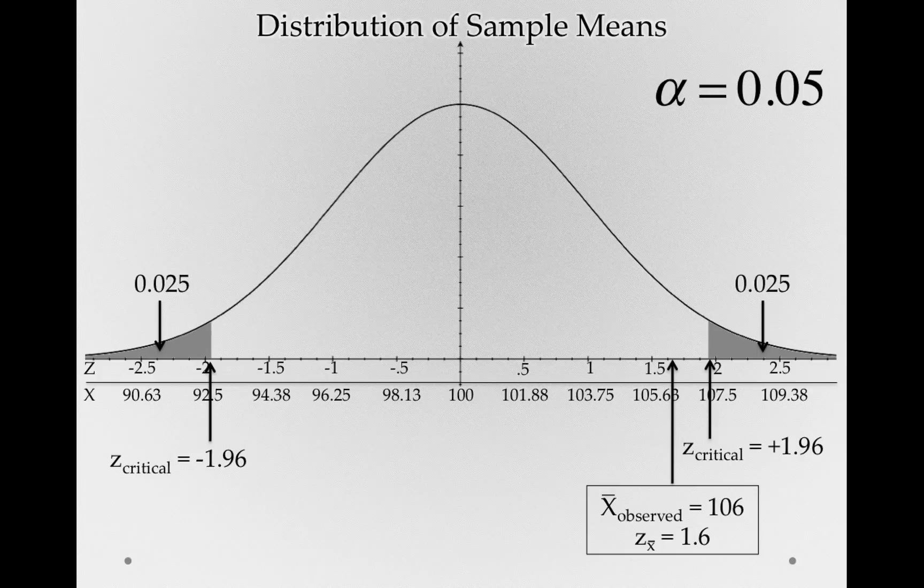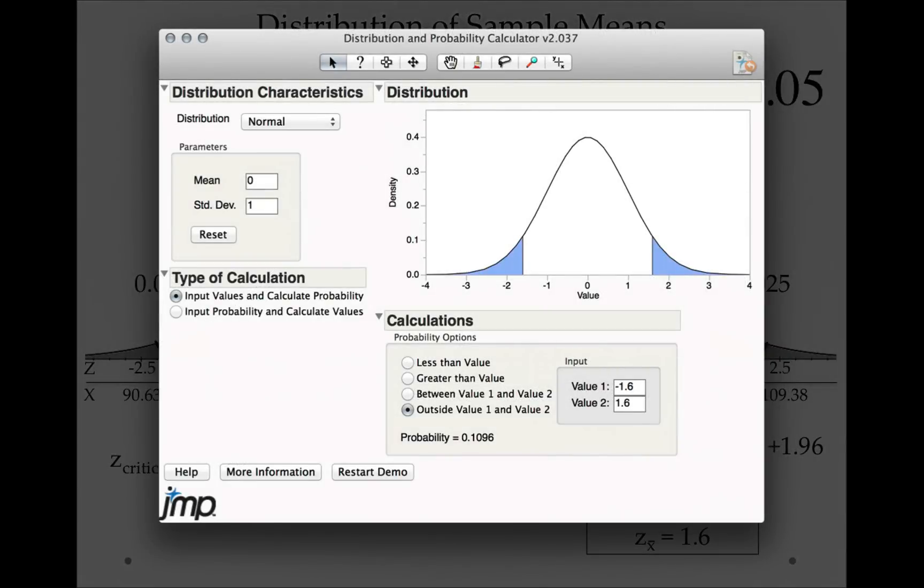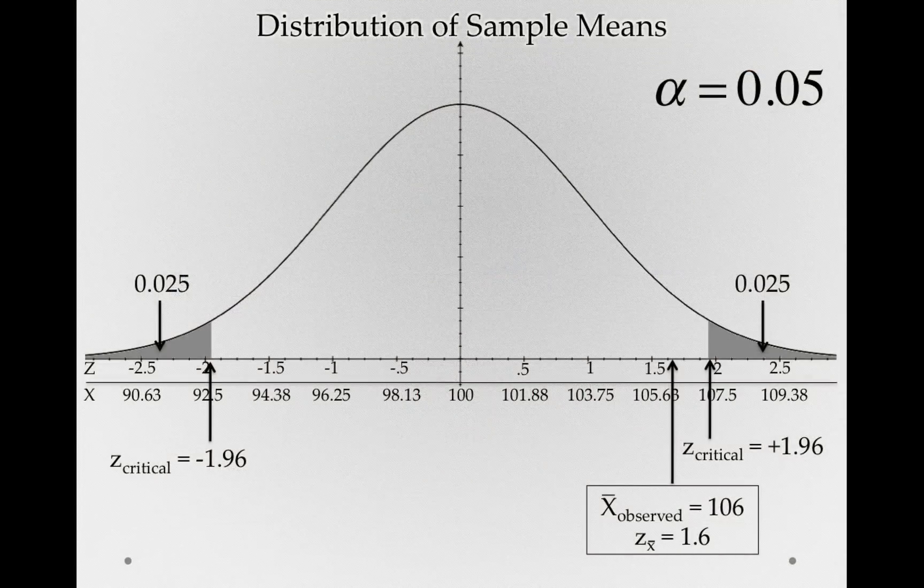You might recall we looked up our two-tailed p-value before using the Distribution and Probability Calculator, and we found that our two-tailed p-value was 0.1096. That is, our two-tailed p-value was greater than 0.05.